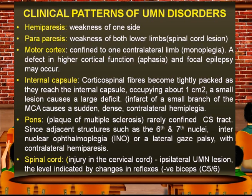The clinical patterns of upper motor neuron lesions include hemiparesis — weakness of one side — paraparesis, which is weakness of both lower limbs seen in spinal cord lesions, and monoplegia — confined to one contralateral limb from motor cortex lesions. Higher cortical deficits such as aphasia and focal epilepsy may also occur with cerebral cortex lesions.